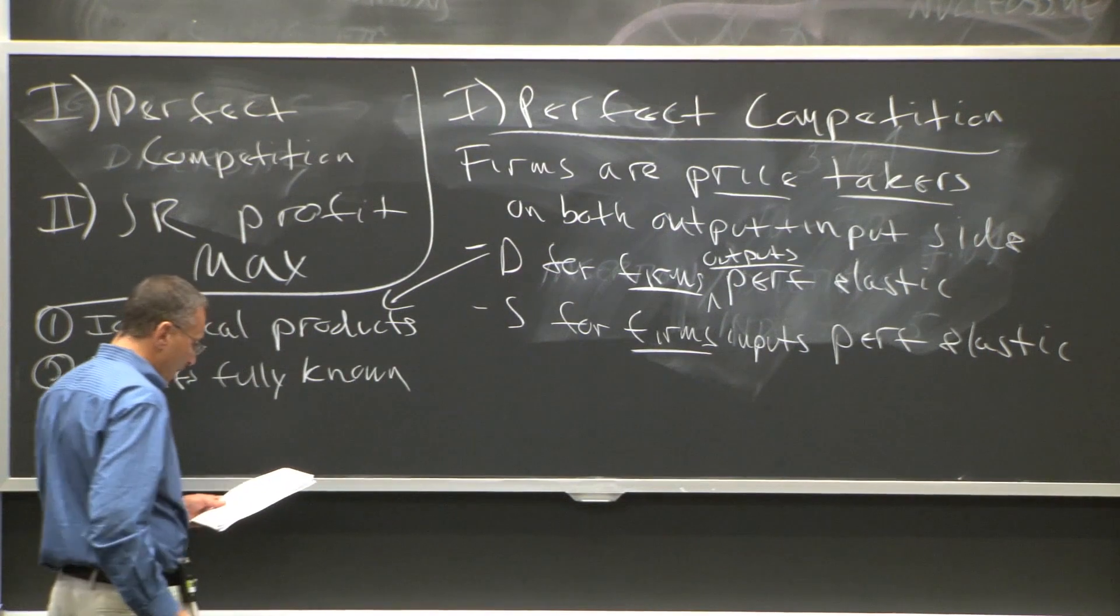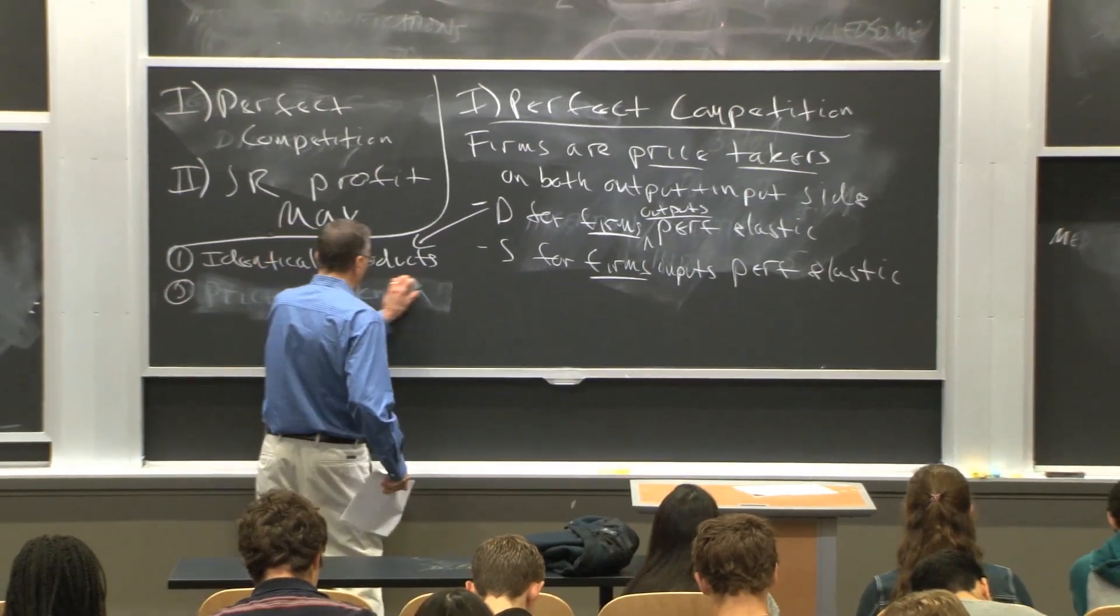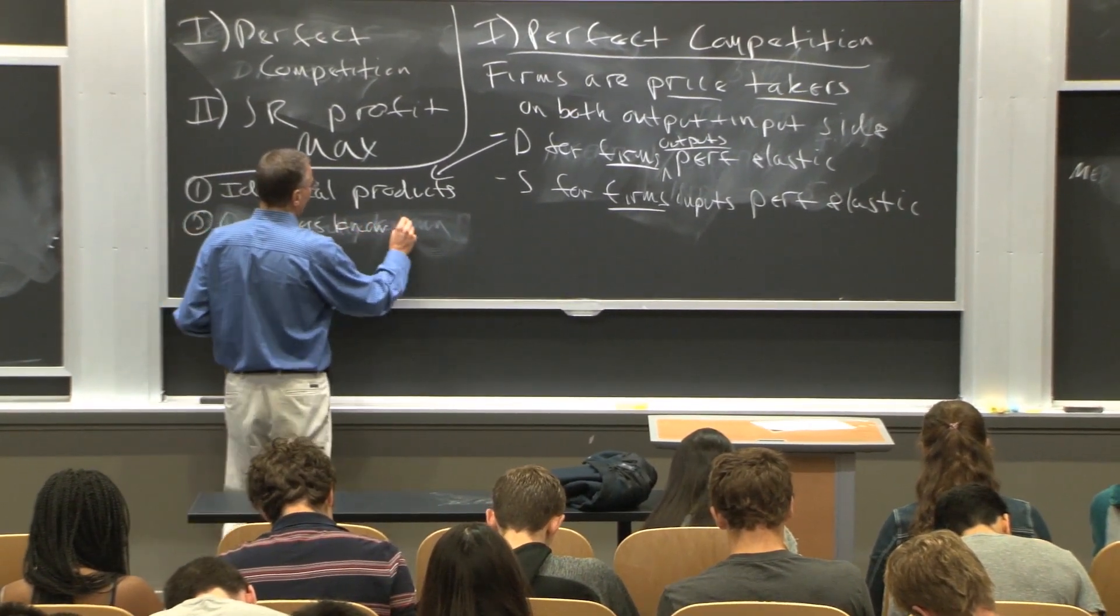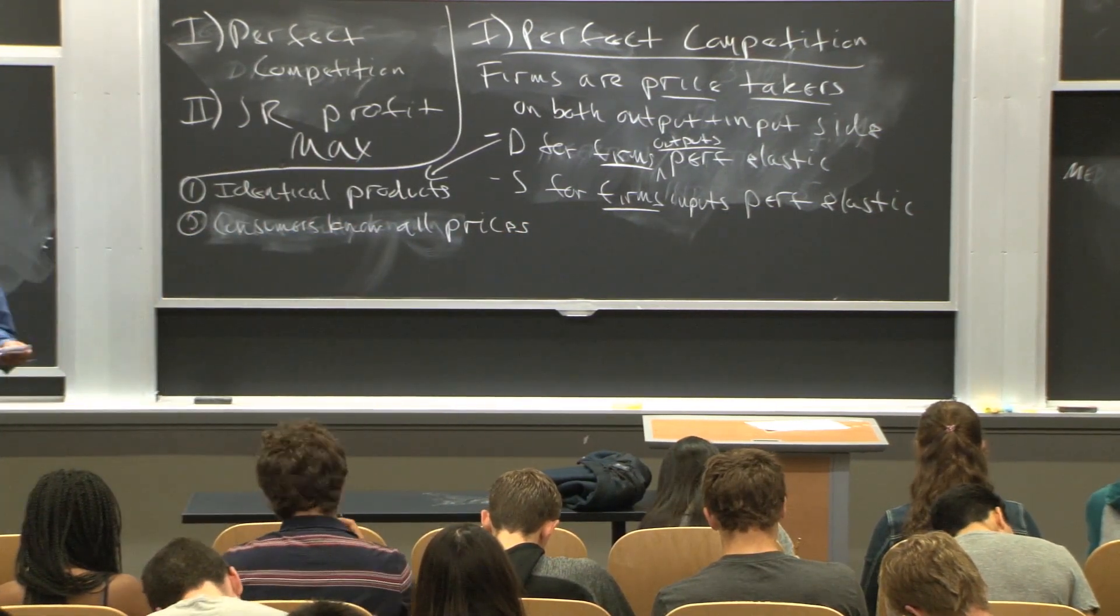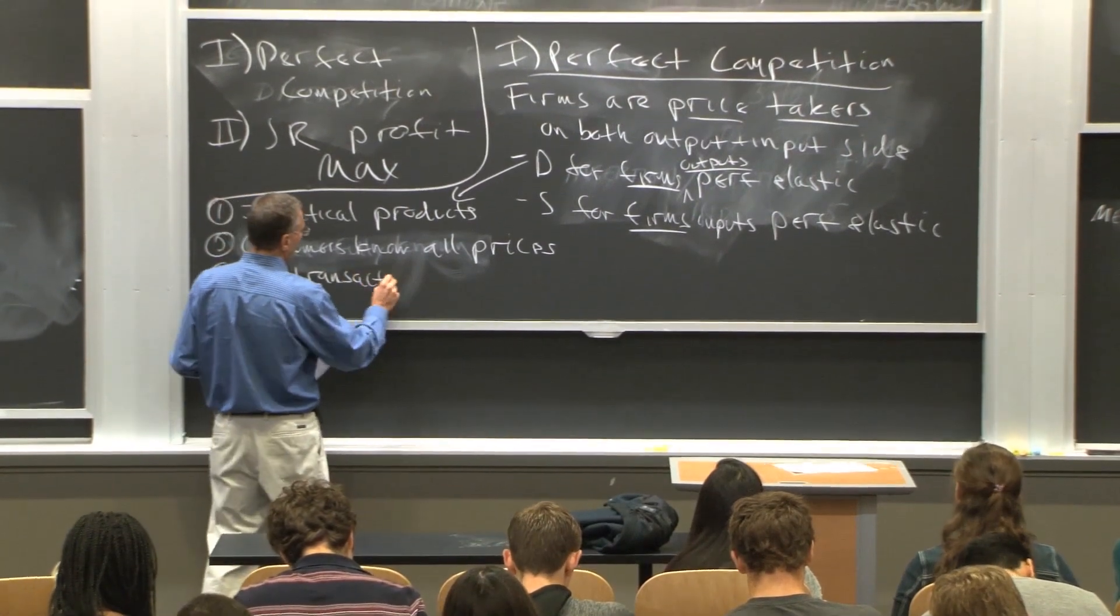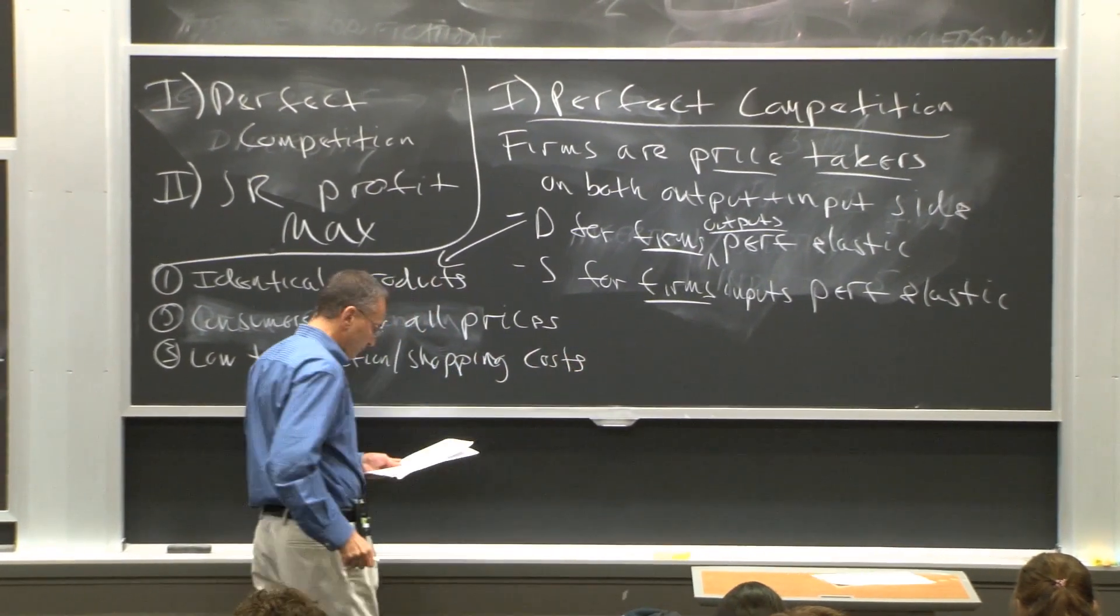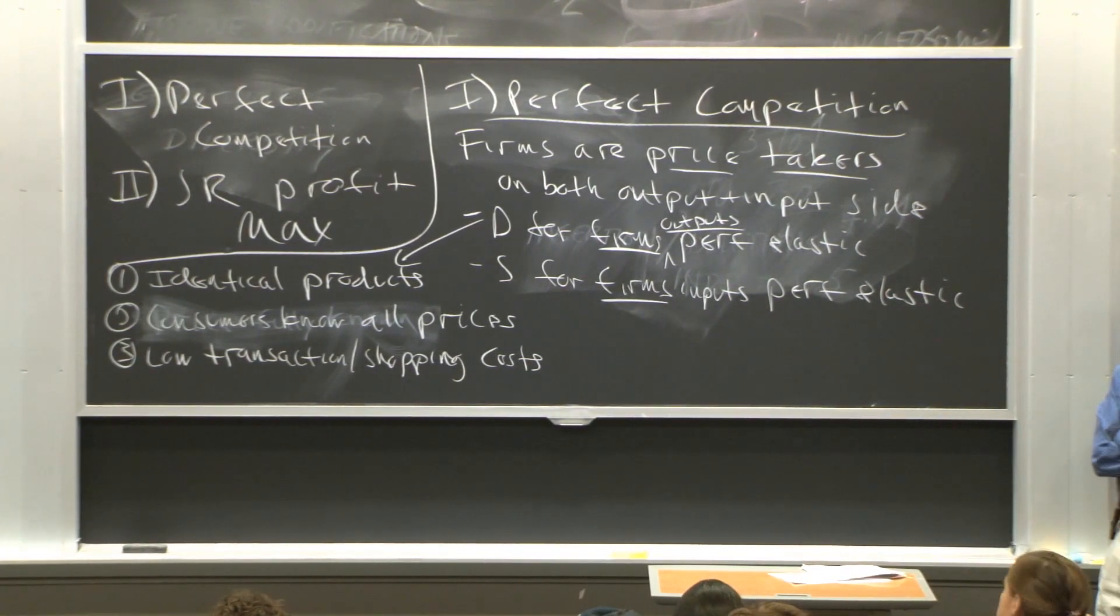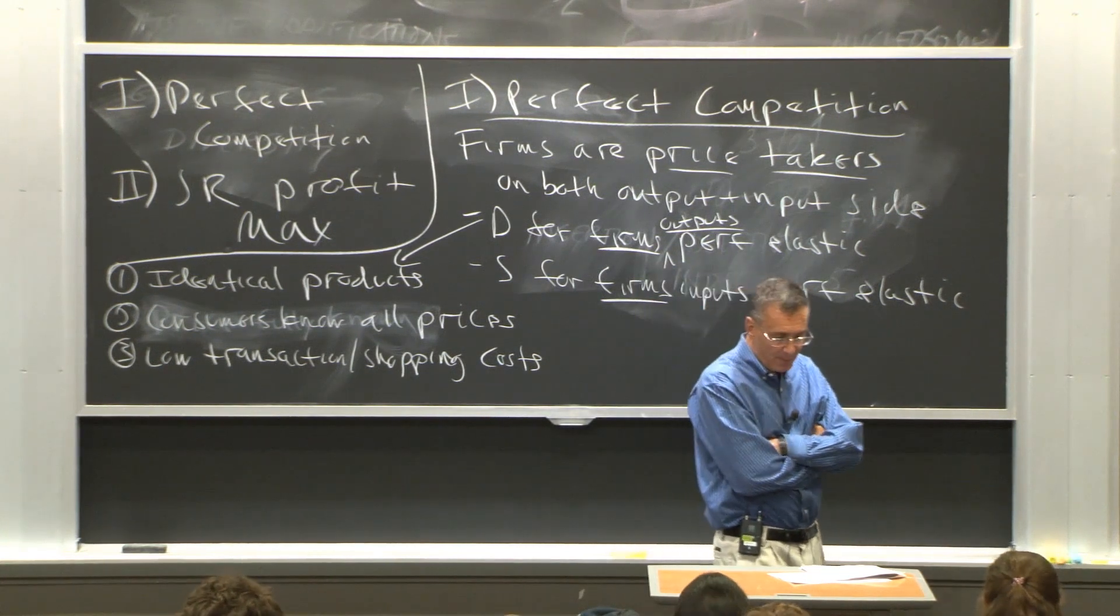The second is that prices are fully known. Consumers know all prices. So the consumers know what price is charged by every firm. And then finally, there are low transaction costs, transaction or shopping costs, that it's easy to shop across firms. So basically, if consumers believe that products are identical, that they know all the prices firms are charging, and they can pretty easily shop across various firms, then demand can be perfectly elastic.